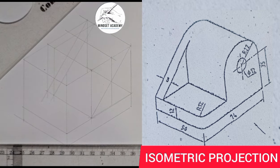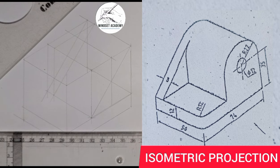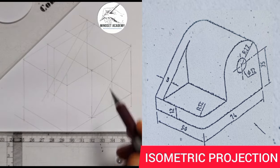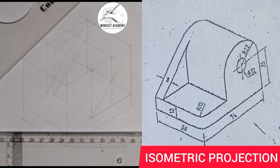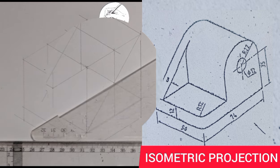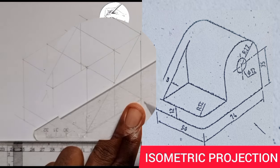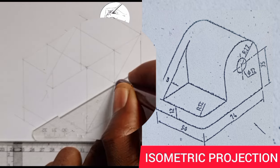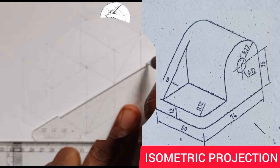Now, the same way of working all along — using the approximate method to construct these arcs, because they are elliptical in shape. I've already gotten this point here where they are meeting. I will just draw a line across that point using my instrument — go from here and close it up.